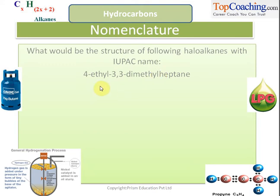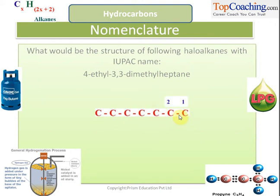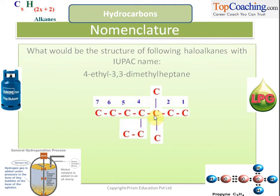Heptane is the last word, which is the name of the longest chain, so we make seven carbon atoms and number them one through seven. Then we have 3,3-dimethyl, meaning two methyl groups on position three, and 4-ethyl, meaning one ethyl group on position four. So we are ready with the basic structure.